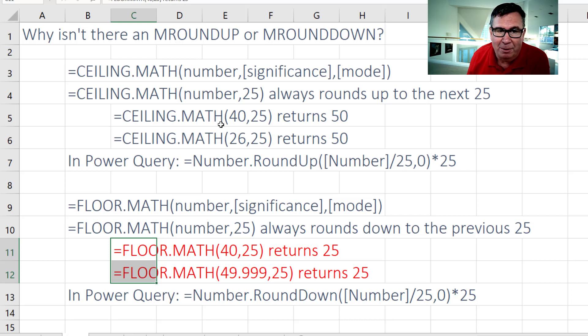So if you have a number 40 and you want to round it to the nearest 25, it's always going to round up. So 40 goes to 50. Even 26, just something barely over 25, is still going to round up to 50.